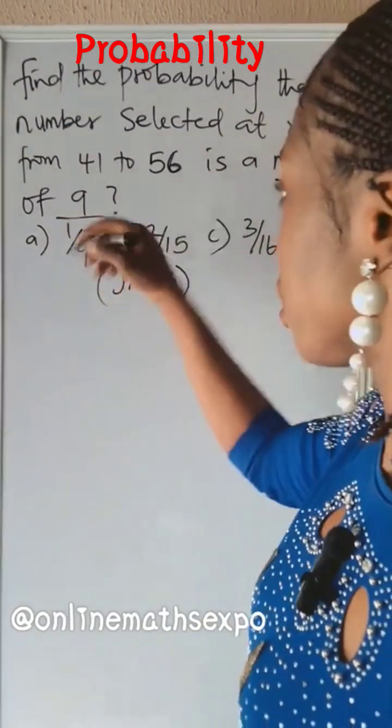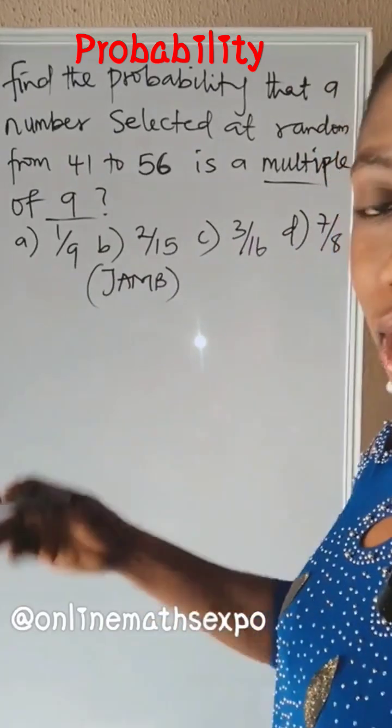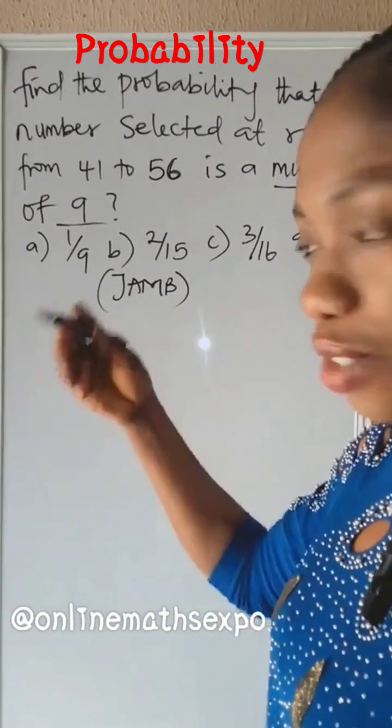So when we talk about multiples of 9, we mean counting in 9s. That's those numbers that 9 can divide. You have 9, 18, and so on.